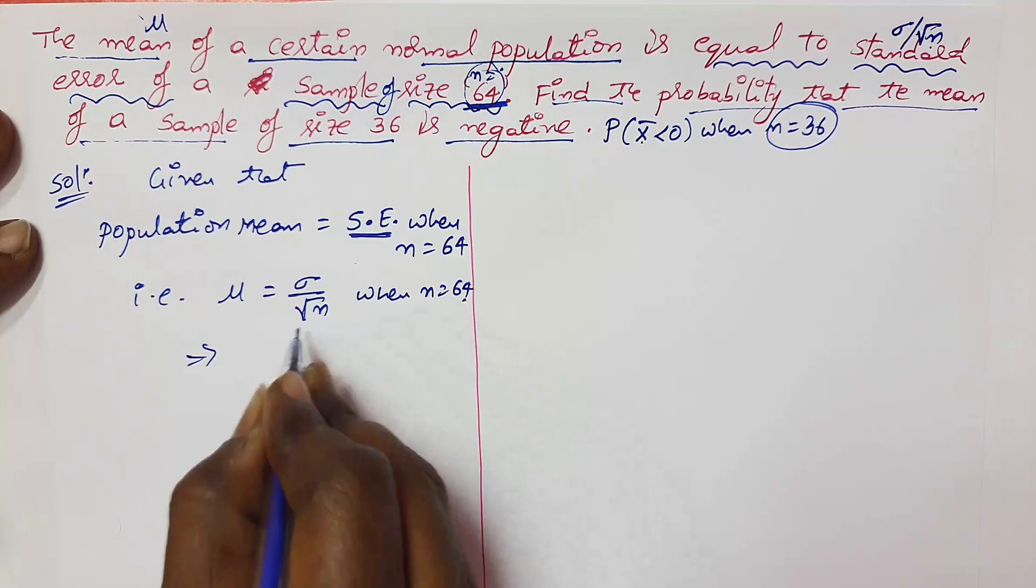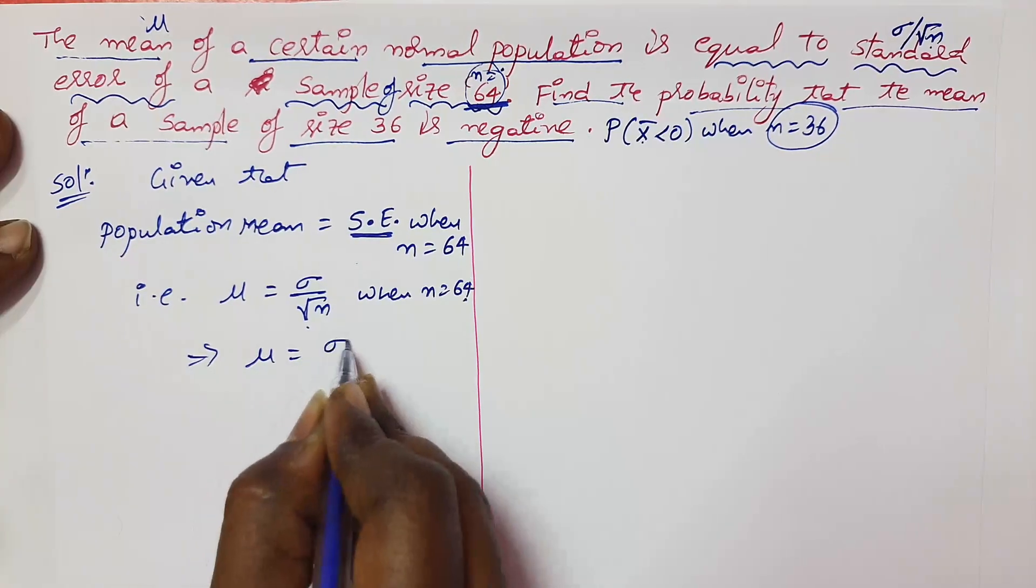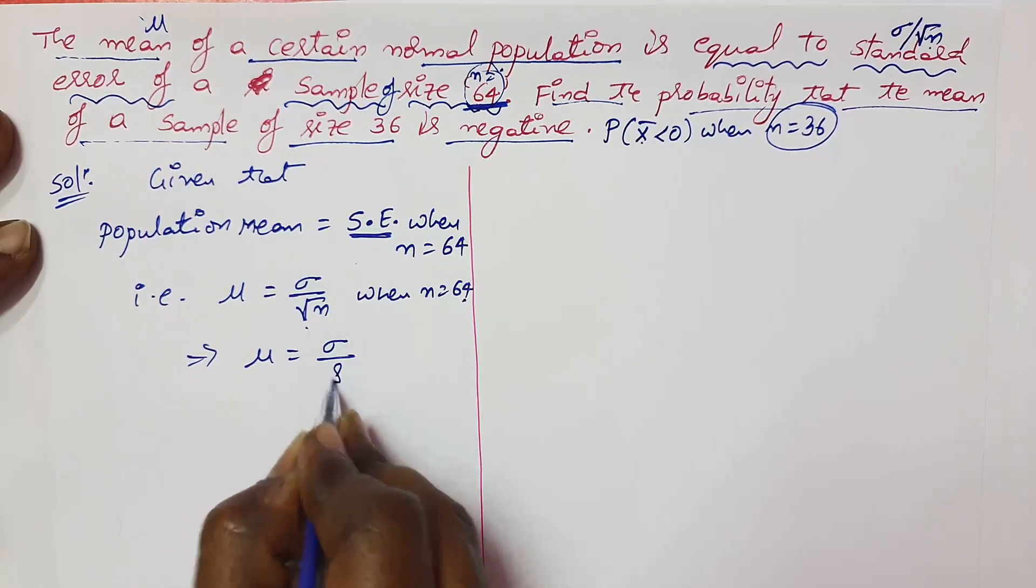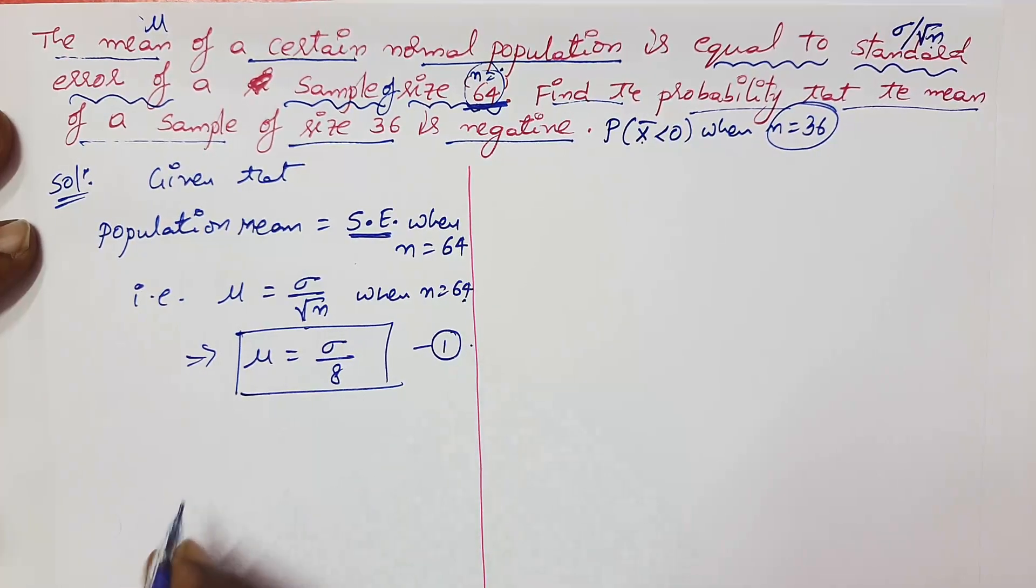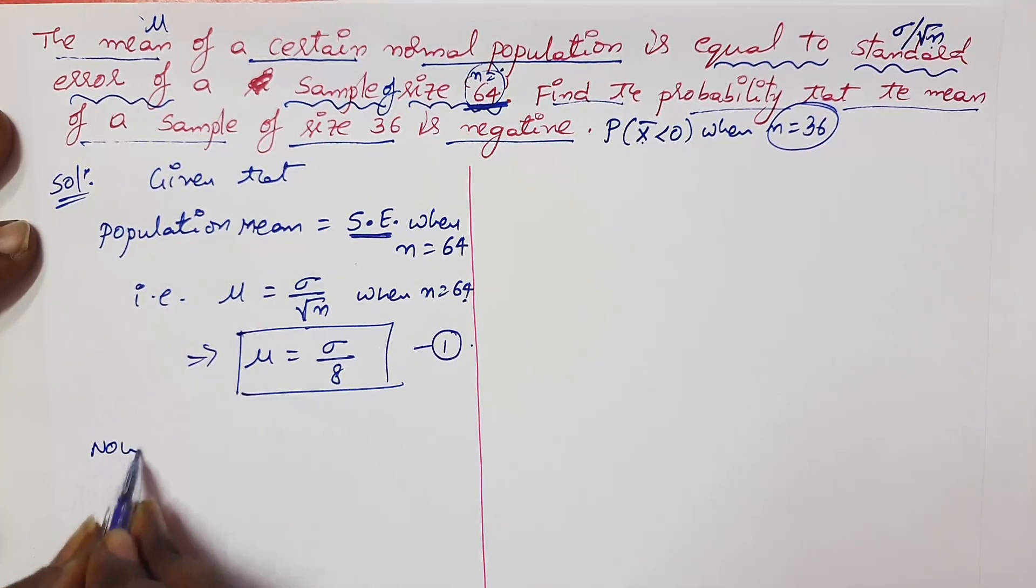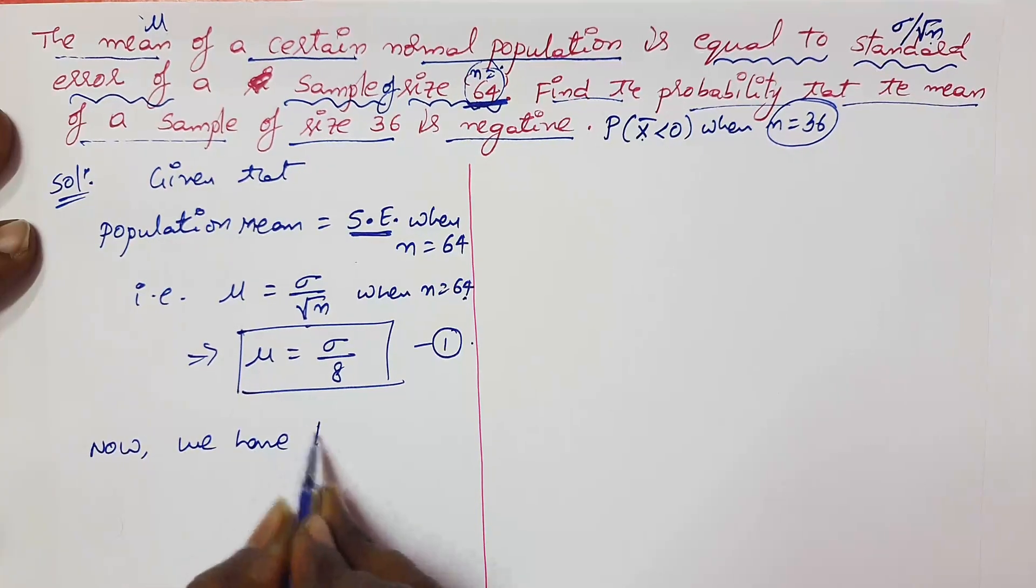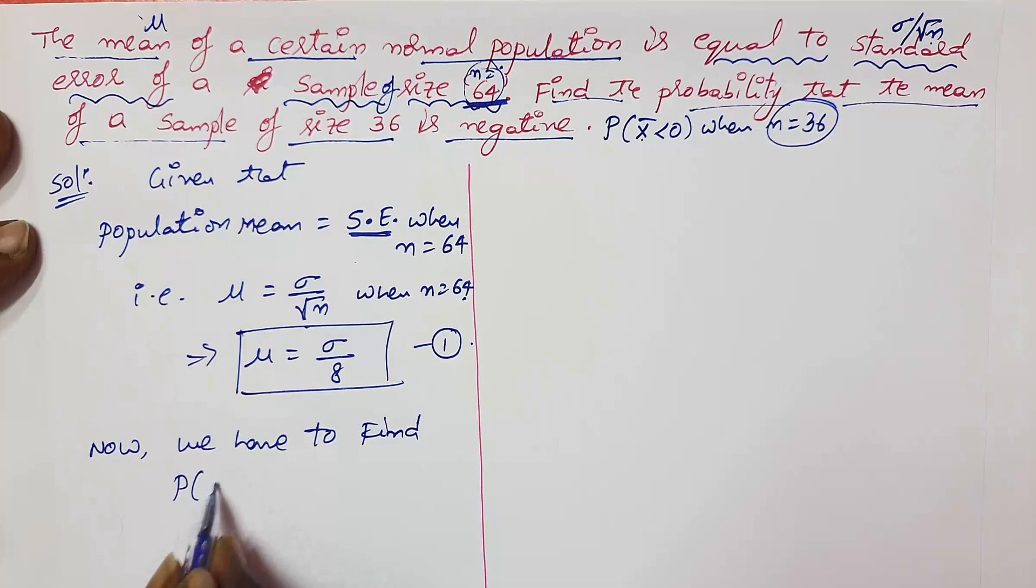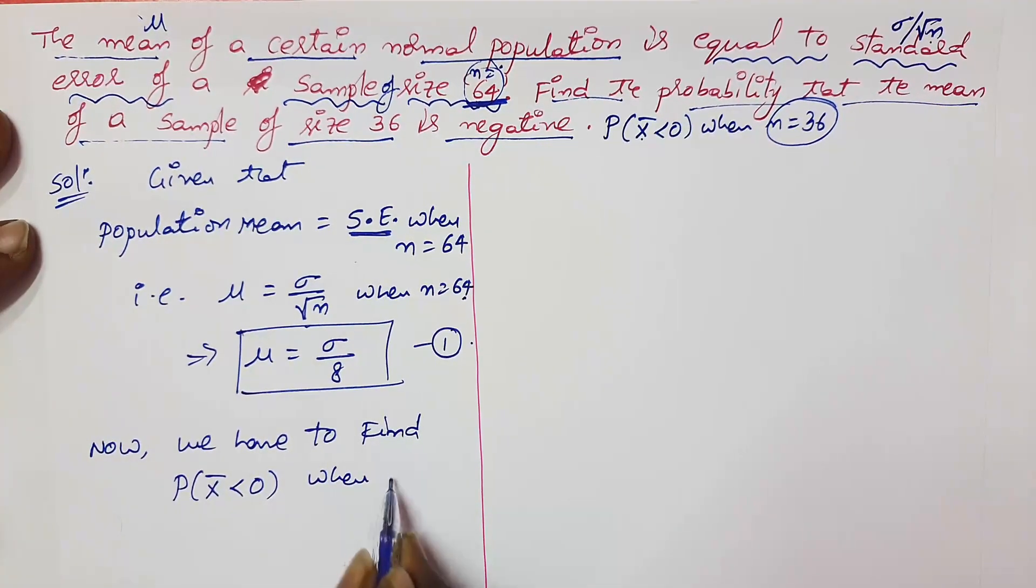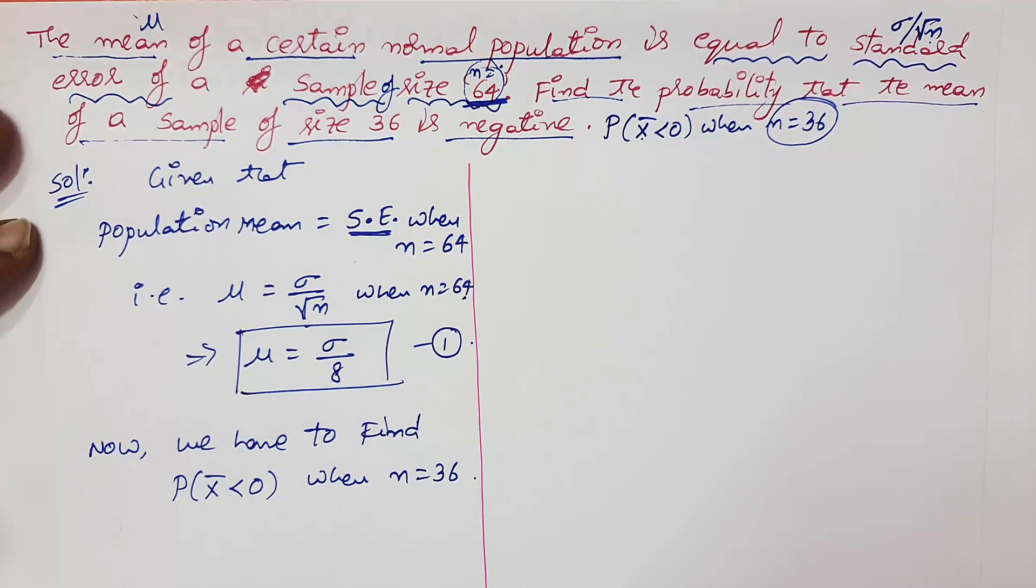So replace n value 64 in this one. So mu equals sigma by root 64, which would be 8. What is our aim? We have to find probability that the sample mean x bar is negative when given sample size n equals 36.